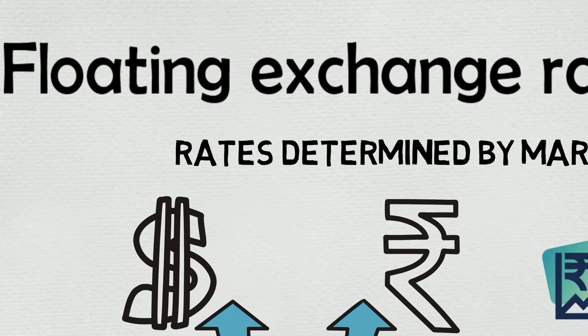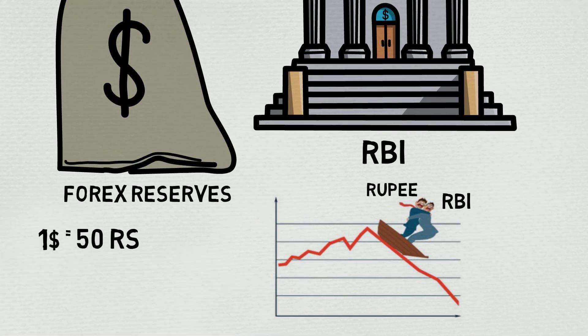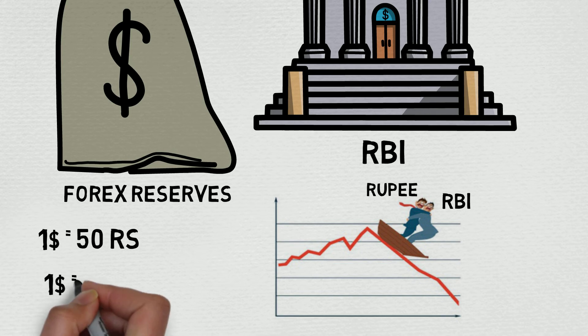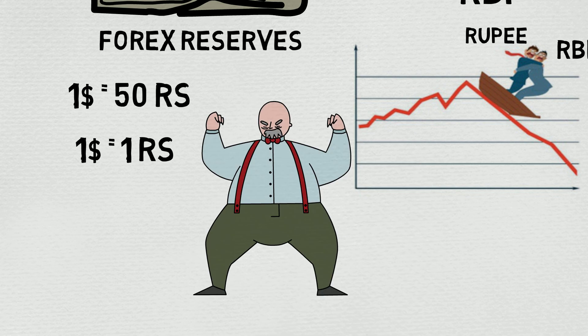Now you may think: if RBI can control the price of the dollar, why won't it just bring it down to 50 rupees per dollar, or even less — one dollar equals one rupee? Wouldn't that be great for our collective national pride? But that's not how economics works. In the next video, we shall see whether or not appreciation of the Indian rupee is actually good for the Indian economy.